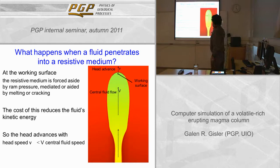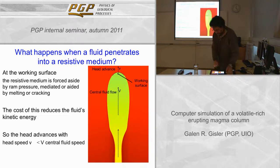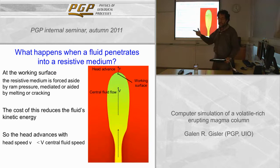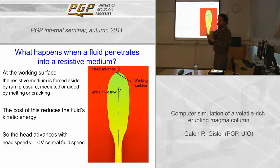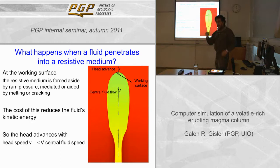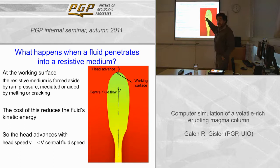There is always a working surface right at the head where the fluid is advancing into the medium. At that working surface, the penetrating fluid loses energy. If it penetrates by melting the surrounding medium, it loses energy and cools off. If it's simply ram pressure, likewise it loses kinetic energy. The work of penetrating the resistive medium results in the fluid losing energy. This means that the speed of the head advance is necessarily slower than the speed with which material is delivered to the working surface from below.